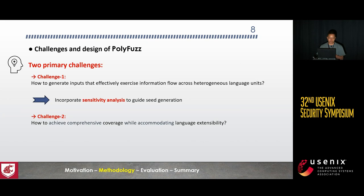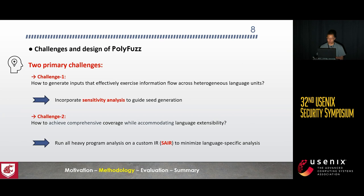Another challenge is how to achieve comprehensive coverage while accommodating language extensibility. To address this, PolyFast introduces a custom intermediate representation called SAIR. By performing program analysis — for example, control dependency analysis and data flow analysis — on this IR, it enables coverage measurement and branch variable monitoring for various language runtimes while minimizing language-specific analysis.